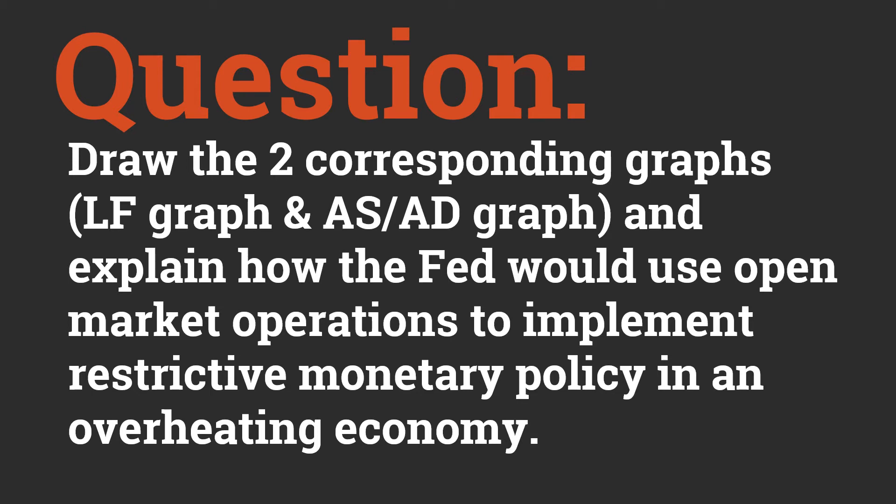Now's a chance for you to quiz yourself — put your notes away. Can you draw two corresponding graphs, the loanable funds graph and the aggregate supply, aggregate demand graph, and explain how the Fed would use open market operations to implement restrictive monetary policy in an overheating economy? Can you draw both graphs and explain how this would all function?